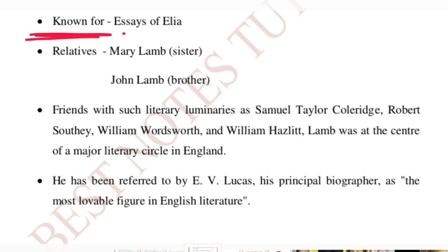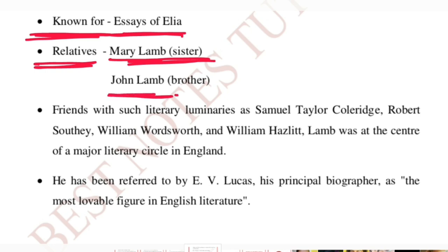He was famous for Essays of Elia. Now let's talk about the relatives of Charles Lamb. We find Mary Lamb, his sister, who was a great poet, and John Lamb, his brother. There might be some confusion: both his brother's name and his father's name are the same — John Lamb.